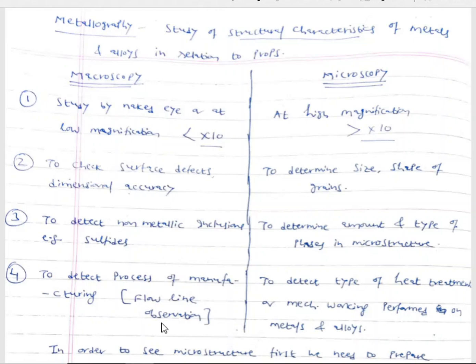We are starting now unit number two. In this unit, the first topic is metallography. Metallography is the branch of science which deals with the study of structural characteristics of metals and alloys. There is a direct relationship between structure and behavior or properties of the material. The basic reason why different materials show different kinds of properties is due to the difference in their internal structure.